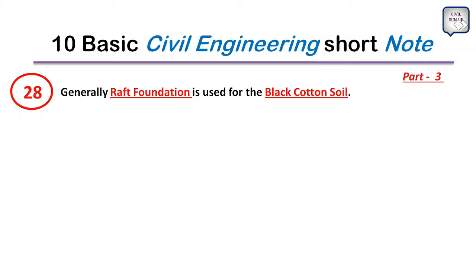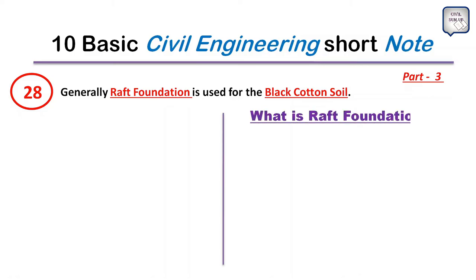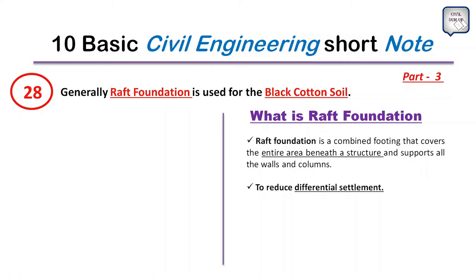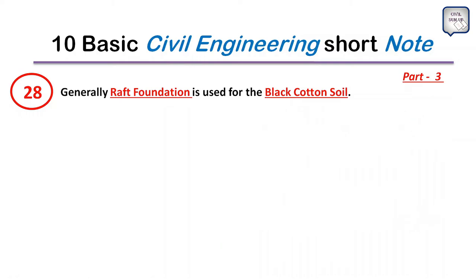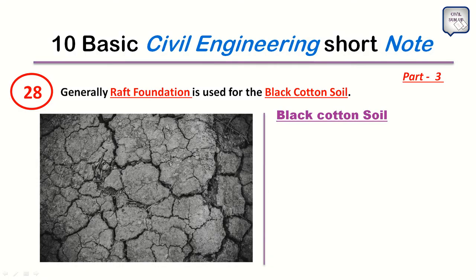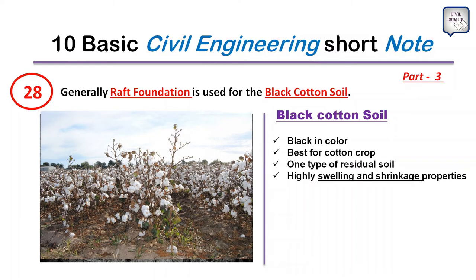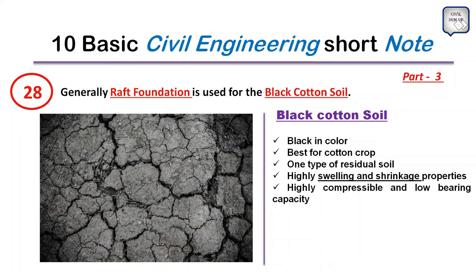Point 28: Raft foundation is generally used for black cotton soil. A raft foundation is a combined footing that covers the entire area beneath a structure, supporting all walls and columns to reduce differential settlement. It is used when the isolated footing area exceeds 50 percent of the total area. Black cotton soil is black in color, best for cotton crops, highly swelling and shrinkage-prone, highly compressible, and has low bearing capacity, causing differential settlement problems.